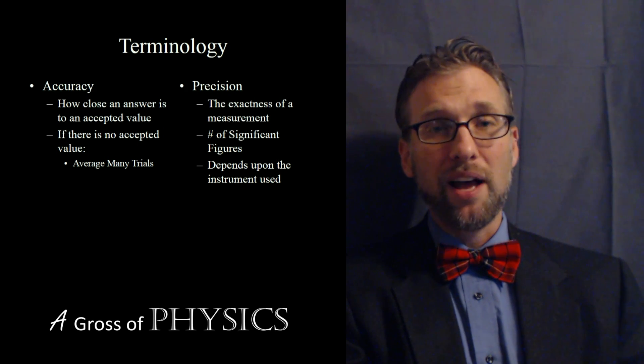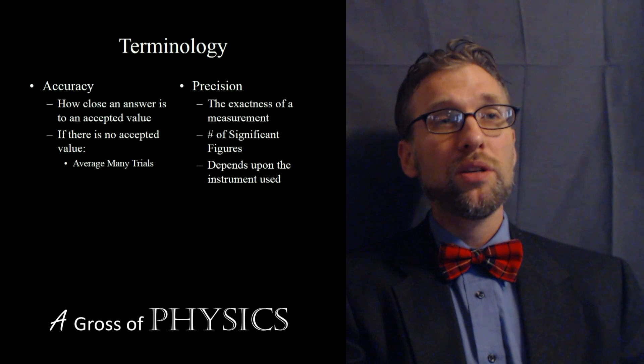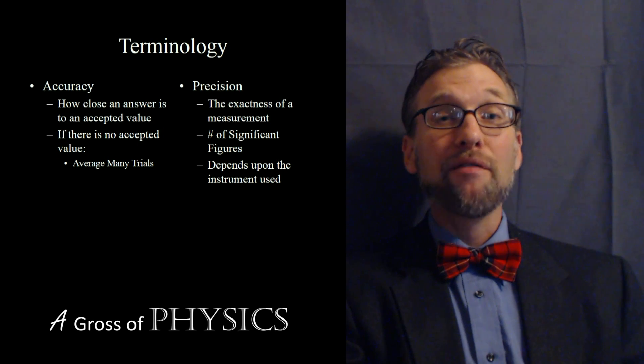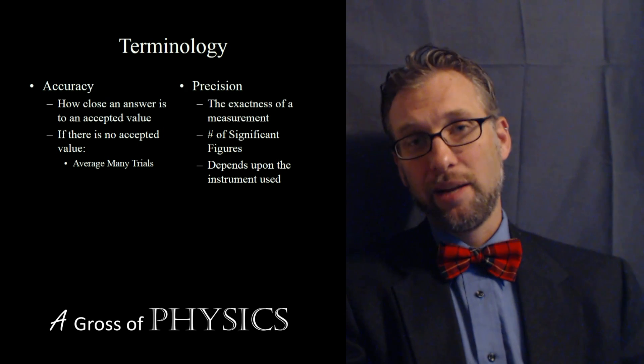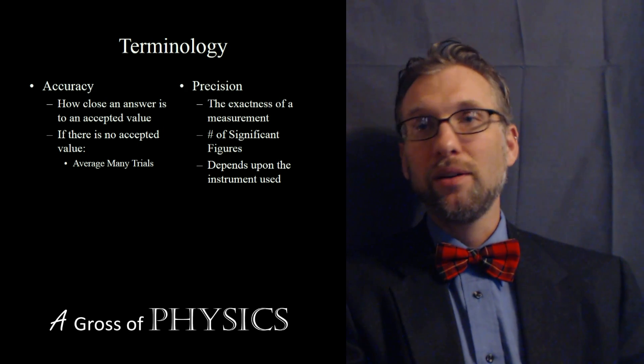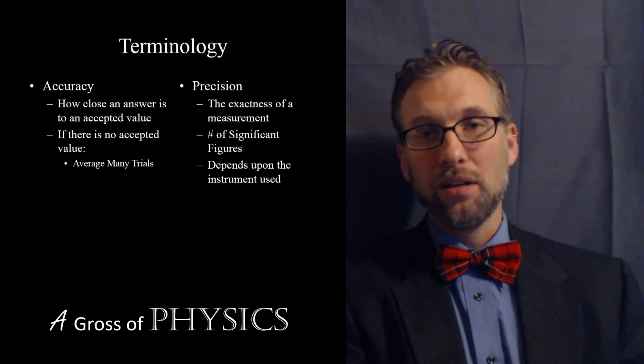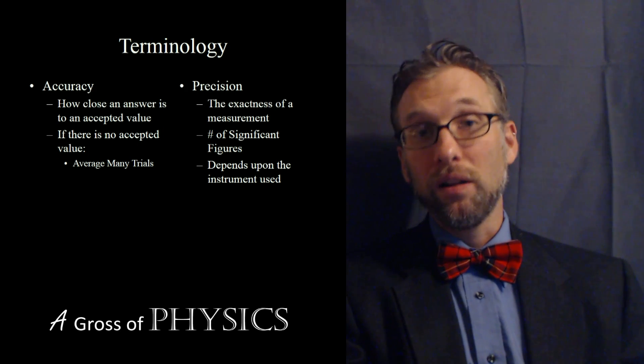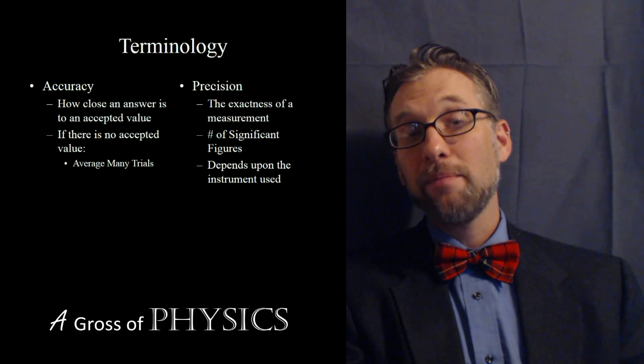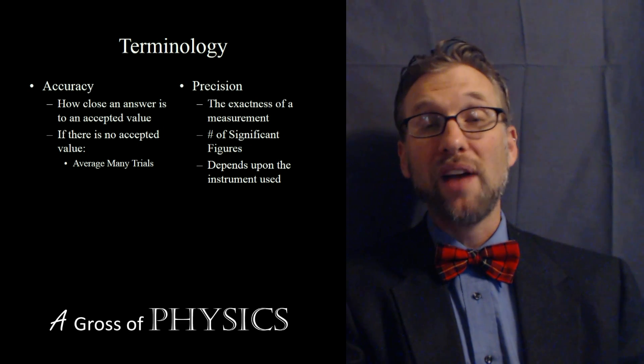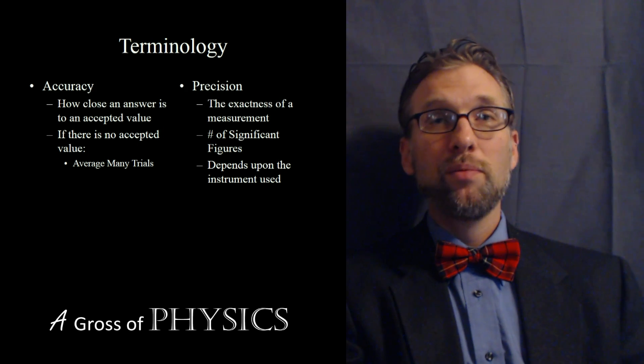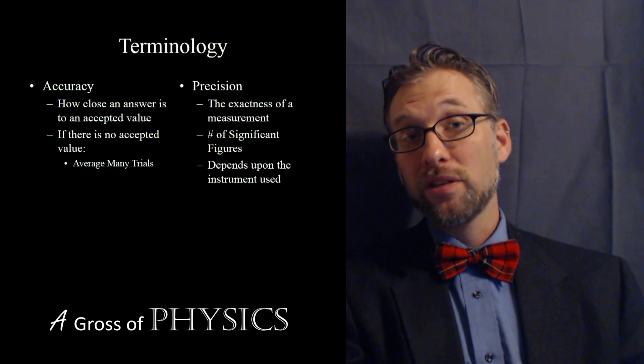If there is no accepted value, what we'll typically do is take a trial of many or an average of many trials and calculate that average as our working accepted value. You may not have an accepted value in the lab if you're measuring the width of a desk or the mass of a certain ball in the lab. However, if every student in the class measures it five times and we take an average of all those values, we can get a working accepted value.